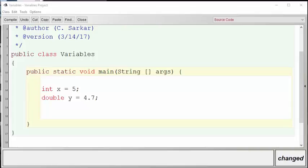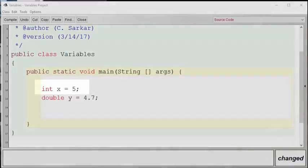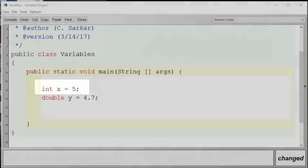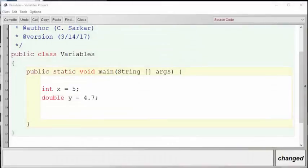In a previous video, we discussed the primitive data types that are built into Java. For example, here we have a statement int x equals 5. We talked about the fact that x is a variable, but what does that mean exactly?